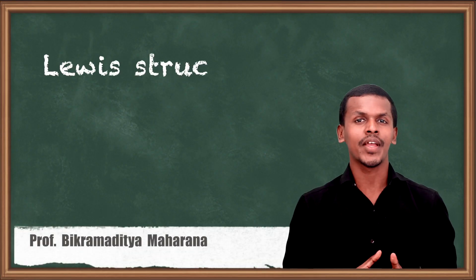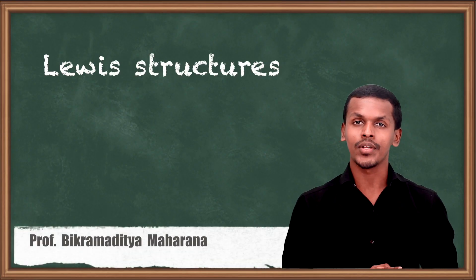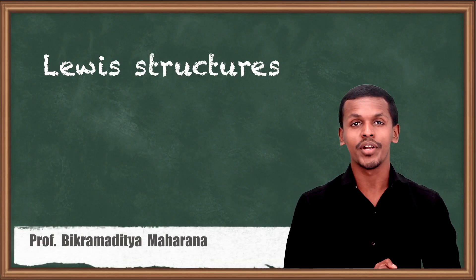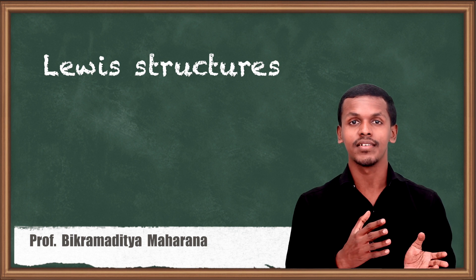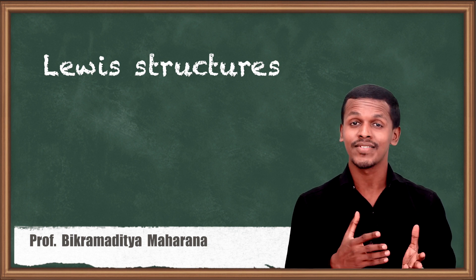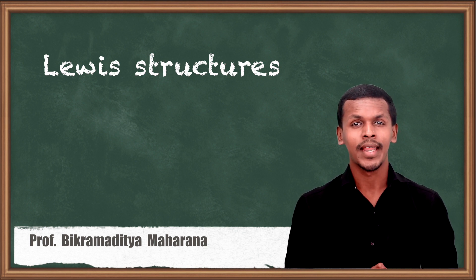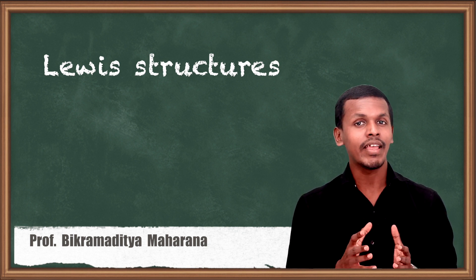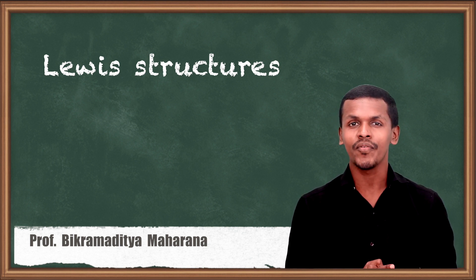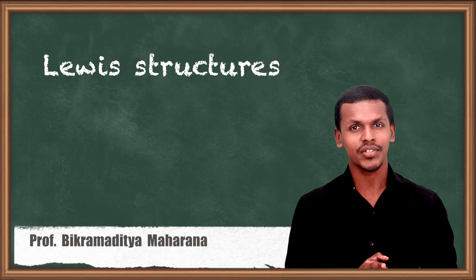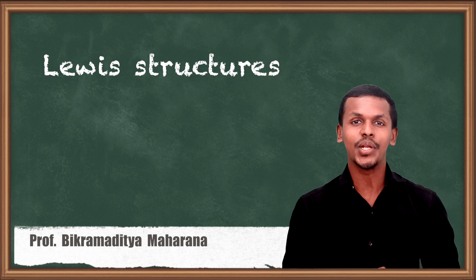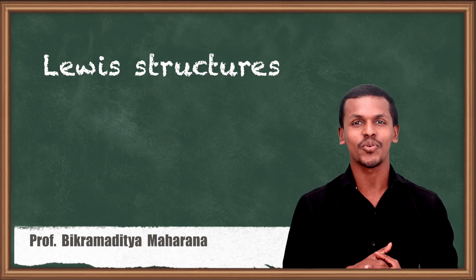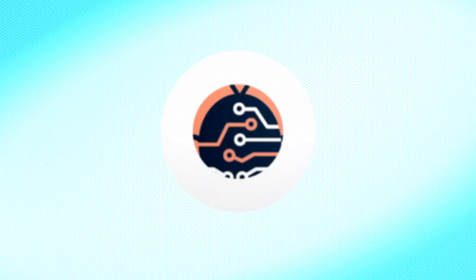Hello friends. In the previous lecture we got to know about how the ionic bond is being formed between two atoms as well as the covalent bond. But in that case we took the help of the Lewis structure. So what is actually a Lewis structure? Let us talk about it.